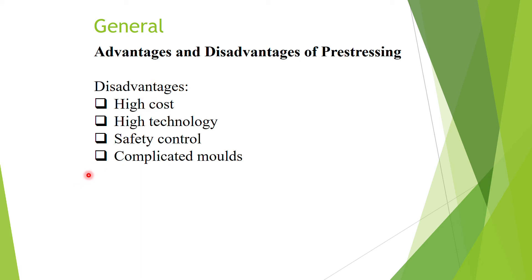Additionally, most pre-stressed structures are pre-cast sections, which normally involve quite complicated molds. These complicated molds are very expensive. Typically, non-rectangular sections such as T sections, Y sections, or double T sections are used for pre-cast pre-stressed elements, all contributing to higher costs.